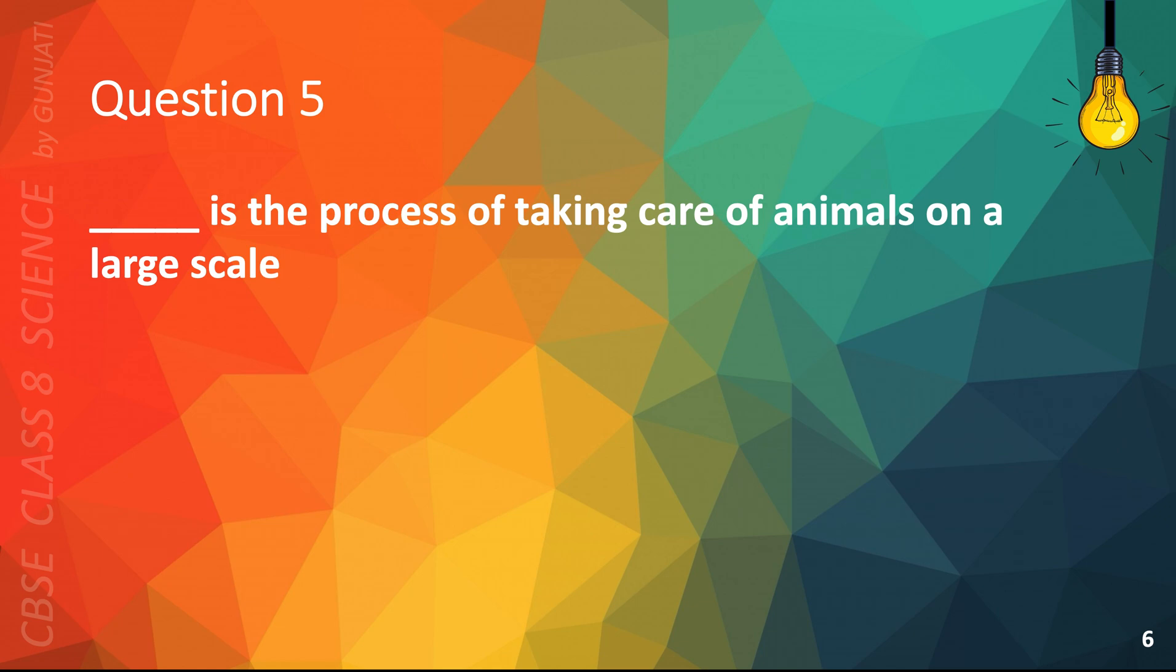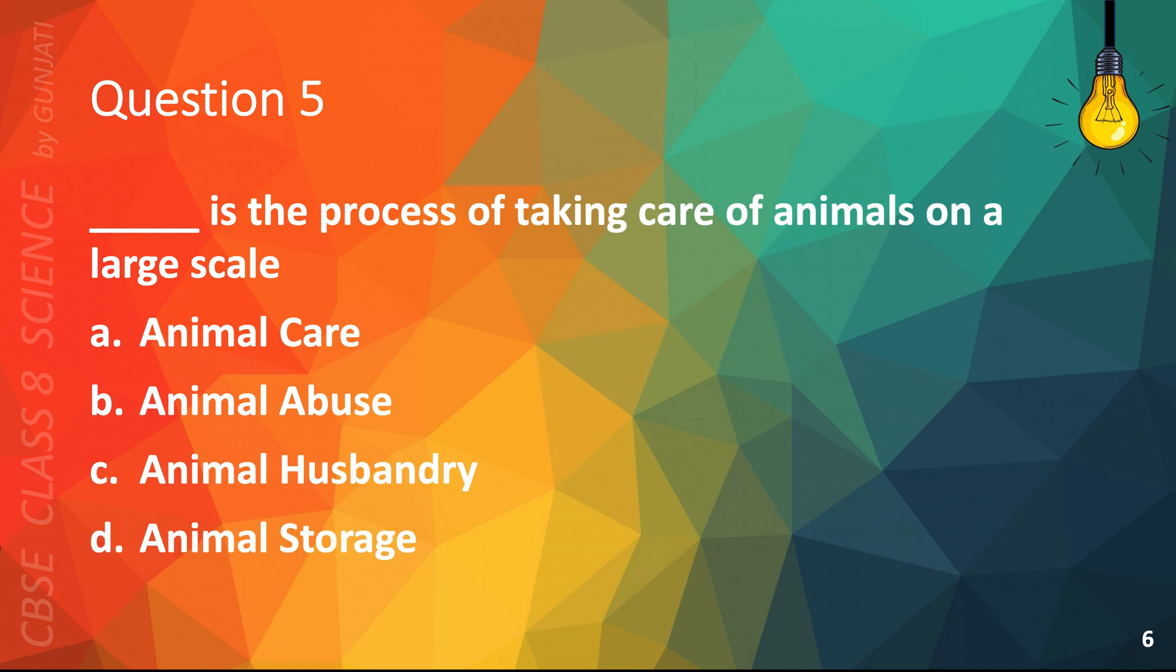Question 5. Blank is the process of taking care of animals on a large scale. A. Animal care, B. Animal abuse, C. Animal husbandry, or D. Animal storage. The correct answer is C. Animal husbandry.